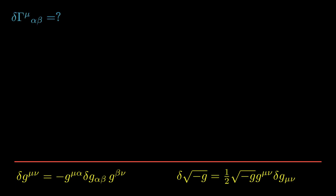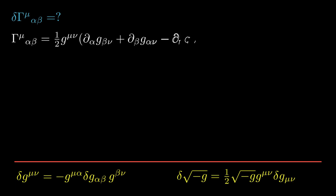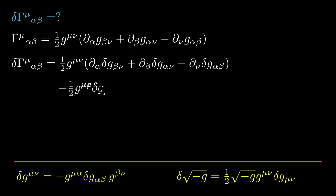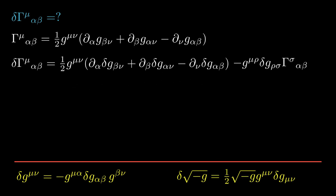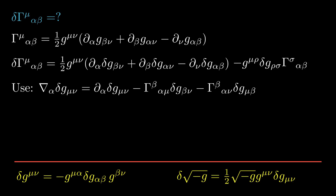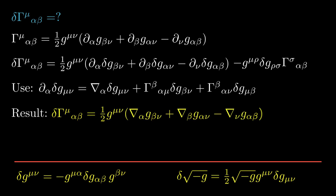Next, we'll need to find the variation of the Christoffel symbols. Start with the definition of gamma mu alpha beta, then vary. Notice that the second line of this result is obtained by applying our expression for the variation of the inverse metric. The second line can be simplified using the definition of the Christoffel symbols. We can use the definition of the covariant derivative acting on delta G mu nu, and rearrange to obtain the partial derivative in terms of the covariant derivative and Christoffel symbol terms. Using this to replace the partial derivatives in the variation of the Christoffel symbols, all of the Christoffel symbol terms on the right-hand side cancel, leaving the following result. Note that delta gamma mu alpha beta is a type (1,2) tensor, as expected from the coordinate transformation rule for Christoffel symbols.